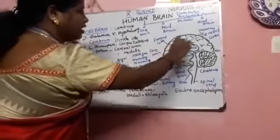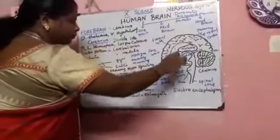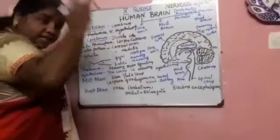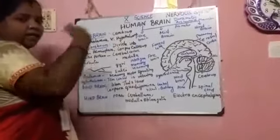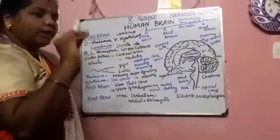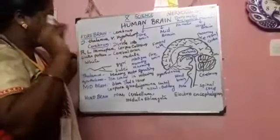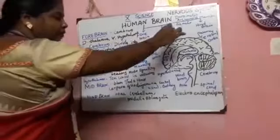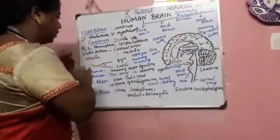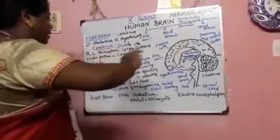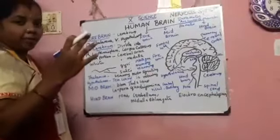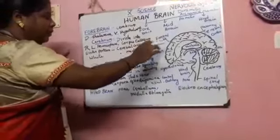Next we see the cerebrum. It is divided into a right as well as a left hemisphere. The cerebrum is not fully split up — it has been connected with nerve fibers. Those nerve fibers are called the corpus callosum. The outer portion is called the cerebral cortex, which is the gray matter.